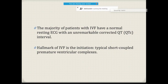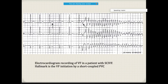The hallmark of idiopathic VF is a short-coupled PVC. On ECG, you see normal sinus rhythm, then a short-coupled PVC appears. This then triggers torsades de pointes, which degenerates into ventricular fibrillation.